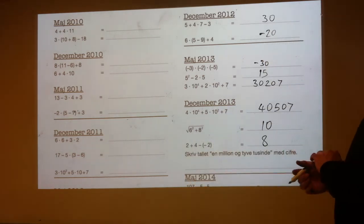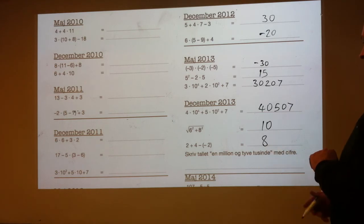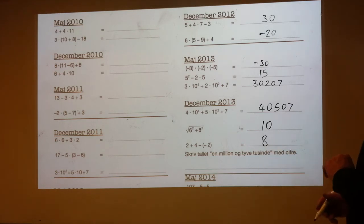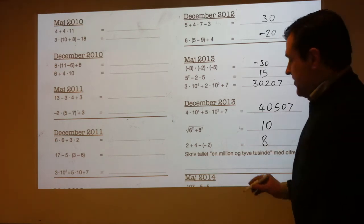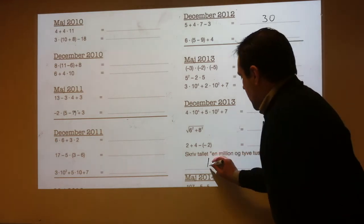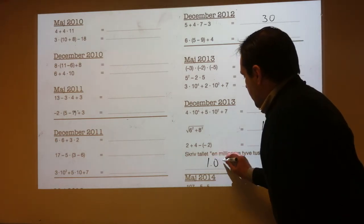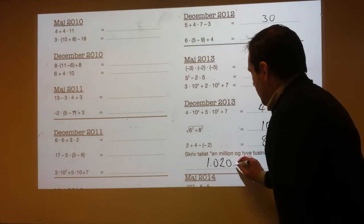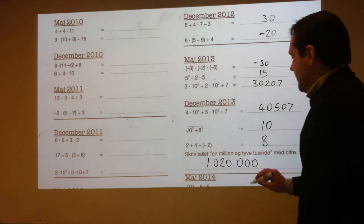Write the number 1,020,000 with digits: 1,020,000.